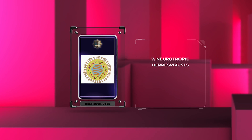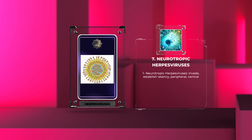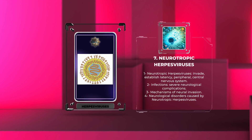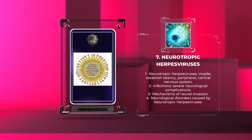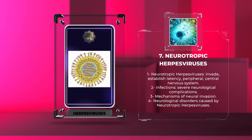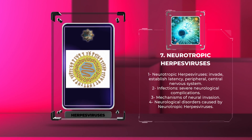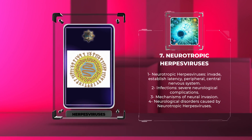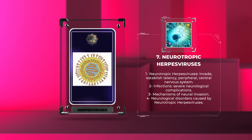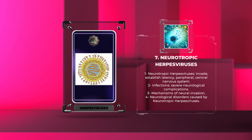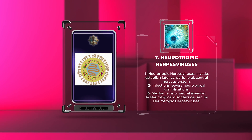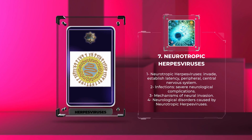Neurotropic herpes viruses, such as HSV-1 and VZV, have a remarkable ability to invade and establish latency within the peripheral and central nervous system. Consequently, infections caused by these viruses can lead to severe neurological complications. In this section, we will decipher the intricate mechanisms of neural invasion employed by these viruses and explore the diverse range of neurological disorders they can cause.